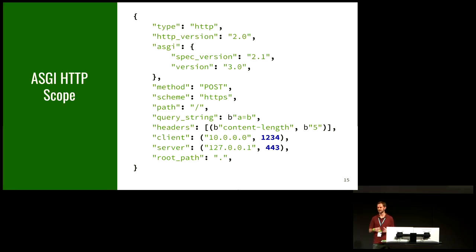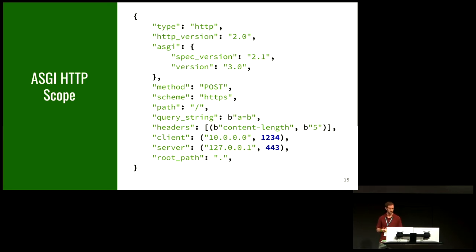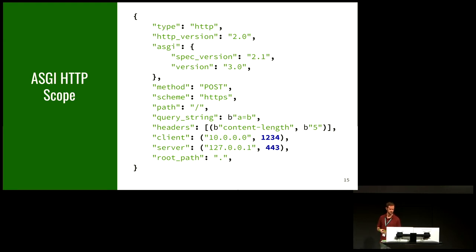So I'm going to go into a bit of detail to explain how ASGI works. The first thing the application callable receives is the scope, which tells you about the connection. For an HTTP request, every ASGI message has a type — so this type is 'http'. It includes an HTTP version, and then defines the request: the method, scheme, path, query string, and headers. Then a little about the connection itself — the client address and server address — and the environment, which is the root path. This is very similar to the WSGI environ.